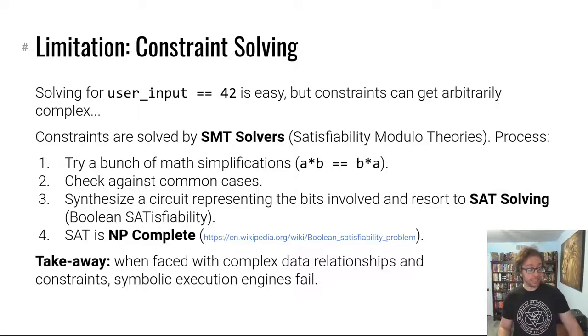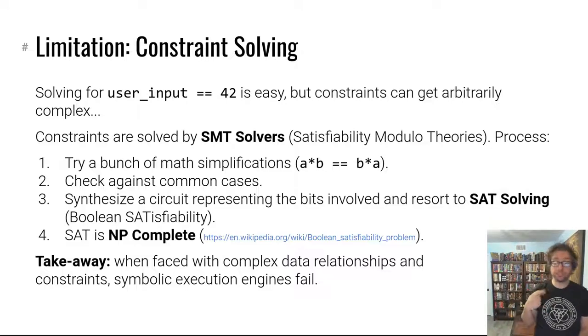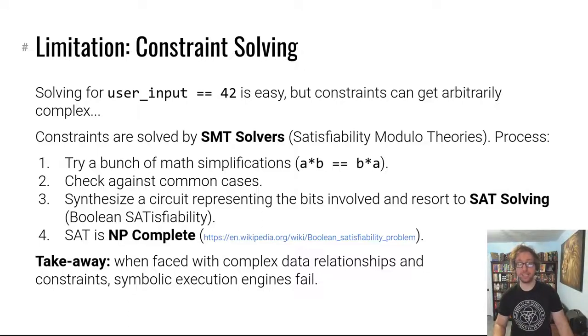So we try a bunch of math simplifications, we check against common cases, we check if something can be trivially solved using these simplifications. If not we keep trying different theories. Eventually we run out of theories, we synthesize a circuit that represents the actual bits involved even if those bits are unknown, and then we resort to boolean satisfiability. Because now these bits are booleans, ones and zeros. Boolean satisfiability is called SAT. It is an NP complete problem, actually the first problem to be proven to be NP complete.